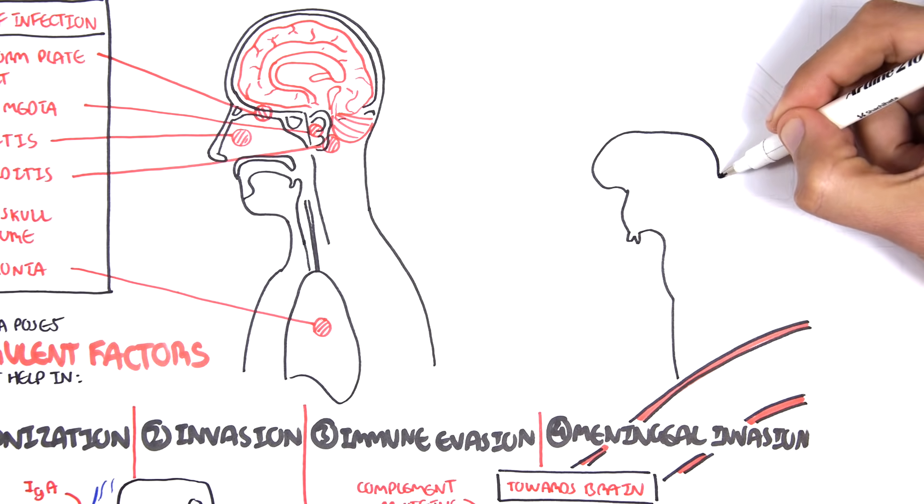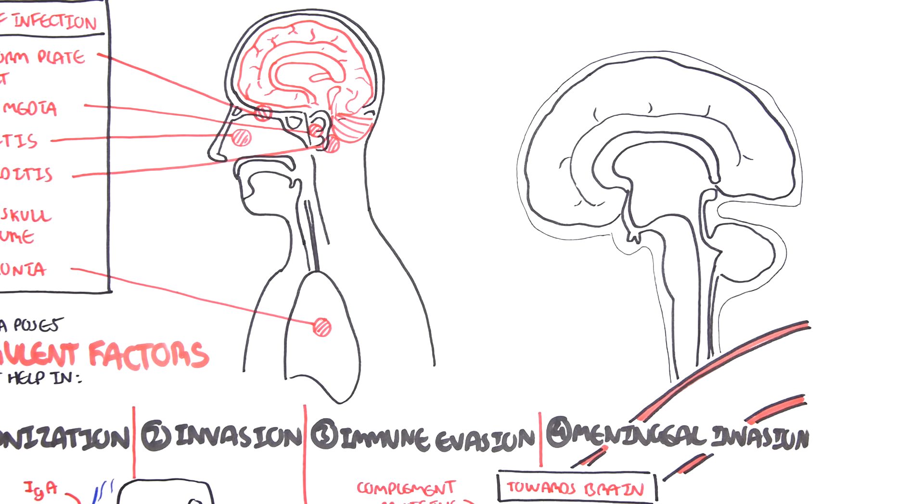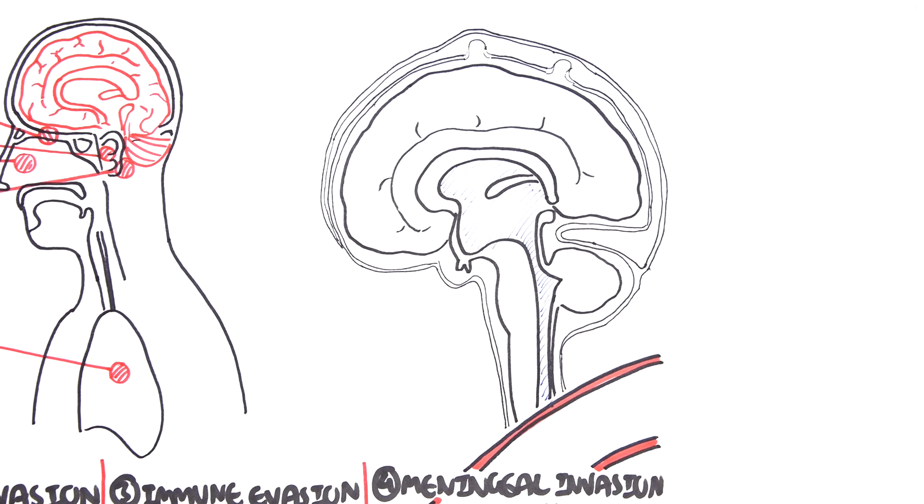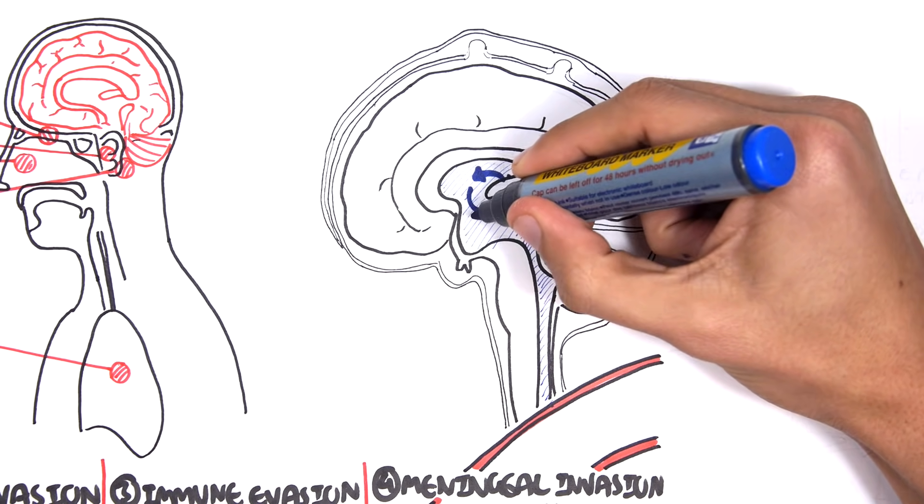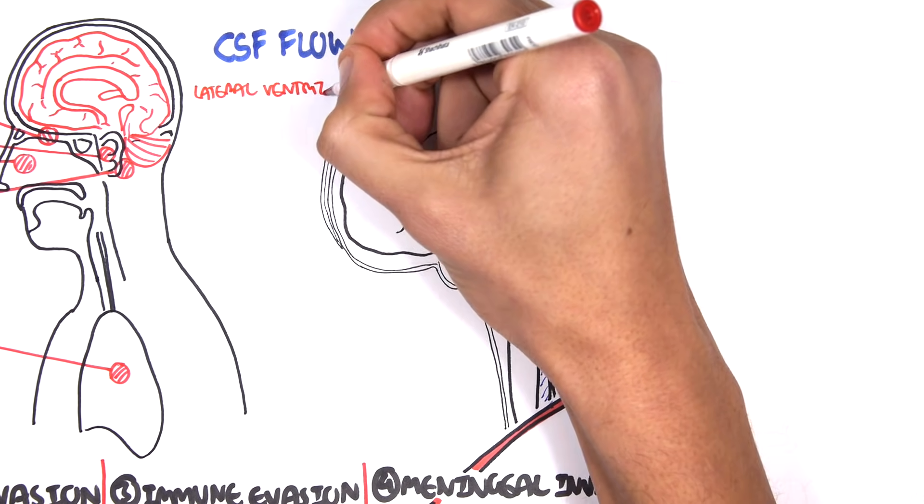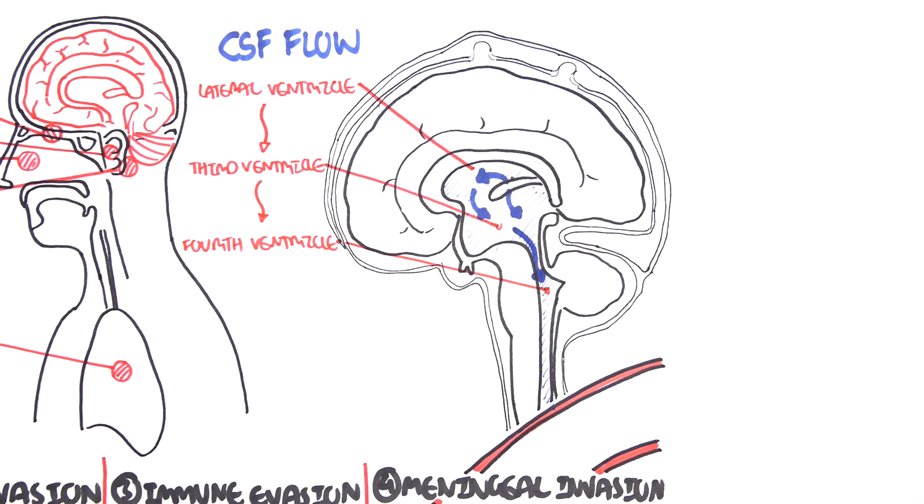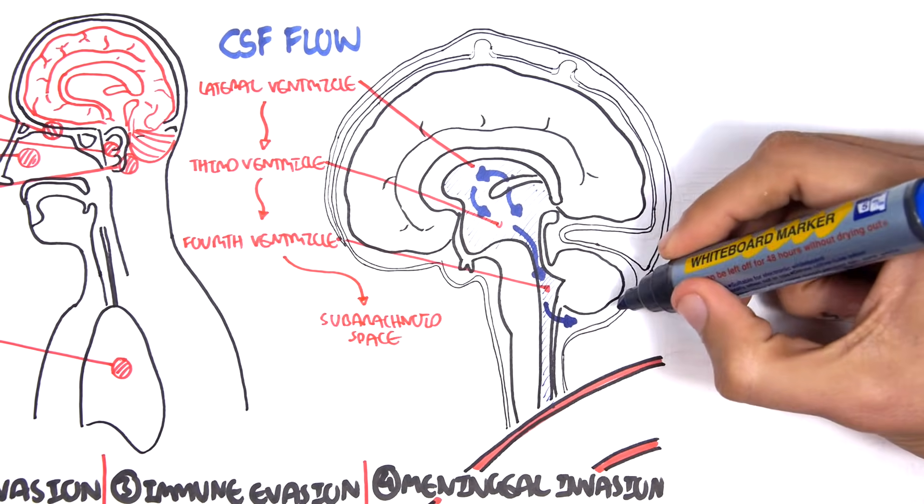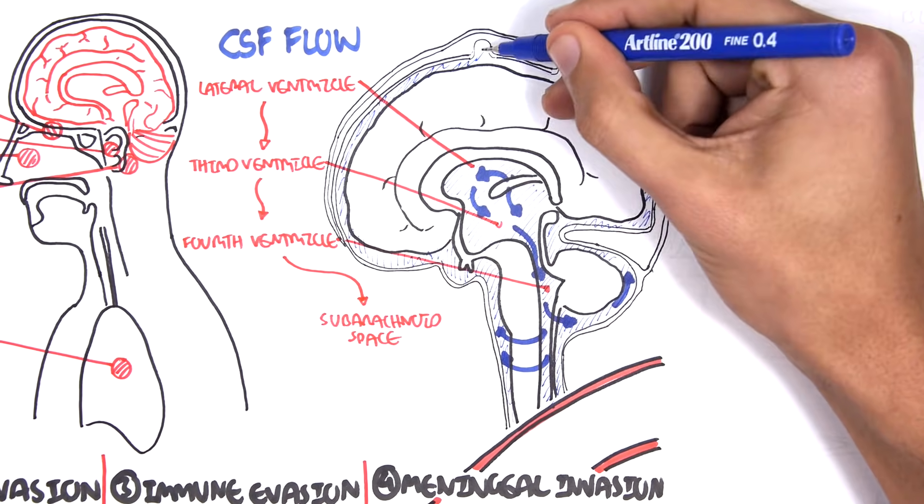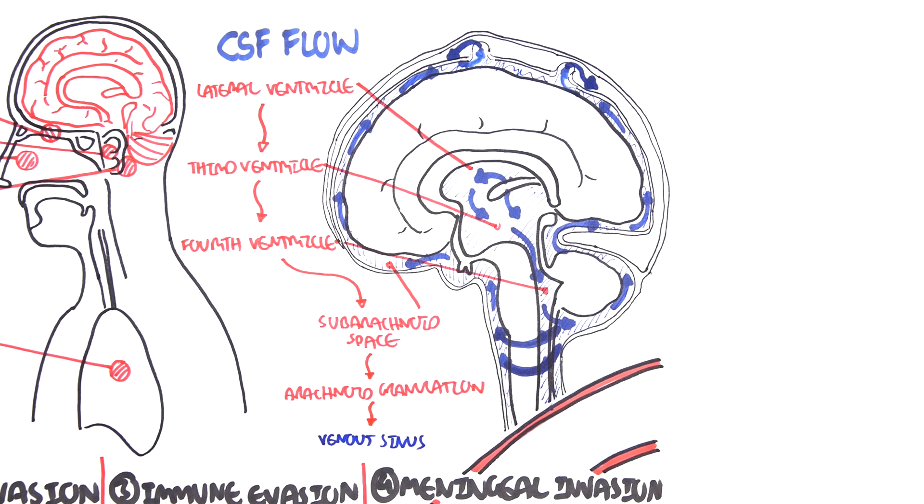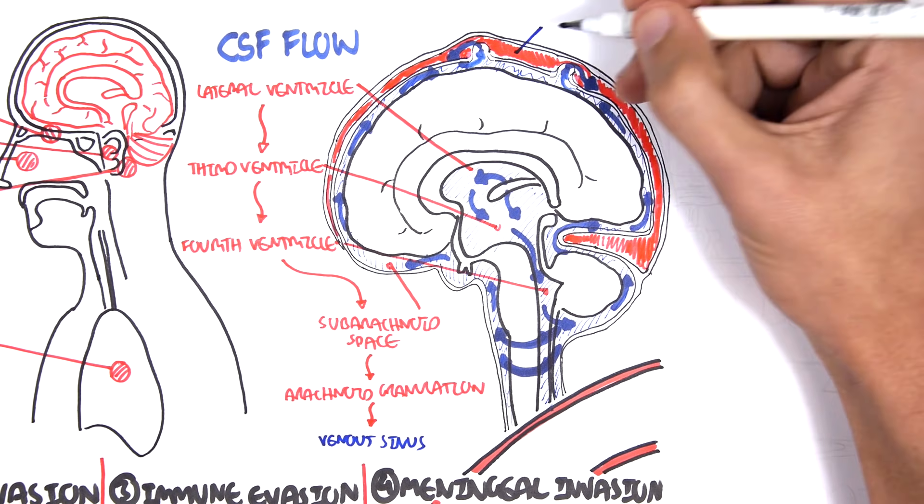Before continuing on with the pathophysiology, it's important to revise and recap the anatomy and physiology of the brain, specifically the cerebrospinal fluid. The cerebrospinal fluid is the fluid produced by the brain, and it helps nourish the brain tissues. Cerebrospinal fluid, or CSF, is produced by the ventricles of the brain. For simplicity, the fluid is produced by the lateral ventricles, which then flows to the third ventricles, then the fourth ventricles, and from the fourth ventricles, it will enter the subarachnoid space. And from the subarachnoid space, it will go through the arachnoid granulation and enter the venous sinus. And the venous sinus is essentially the big veins that will bring the blood back down to the heart. The meninges that we've been talking about all this time are the layers above and below the subarachnoid space.